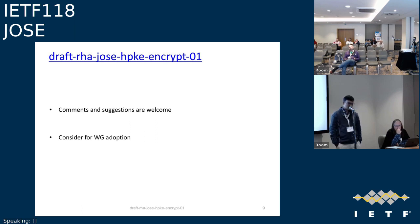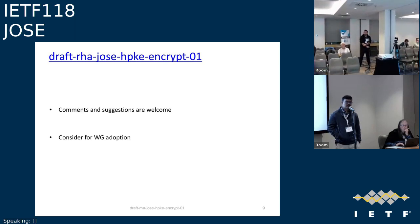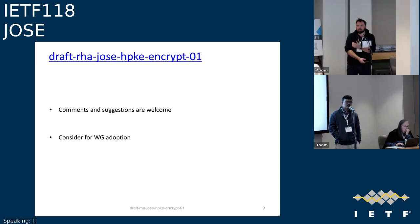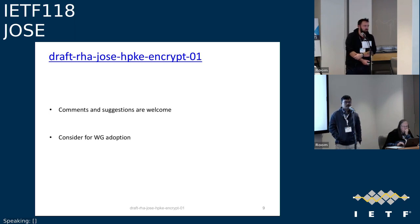Any comments or suggestions? There's a request for working group adoption of this draft. Philip mentioned he's been implementing it to learn more and is considering working on a cookbook draft similar to Andrew Miller's original JWA algorithms cookbook — anyone willing to help can reach out after the session. The presenter welcomed the collaboration. A question was raised about test vectors: they're not in the draft yet but are being worked on and will be required before the draft goes anywhere.